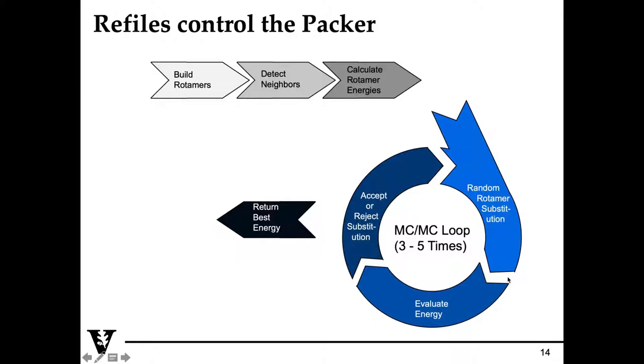After you've done your rotamer substitution, you allow for slight backbone movement to accommodate the rotamer substitution. The idea here is that you can either do a constrained design where you allow only rotamer substitution for highly constrained backbone, or you can do a more lenient sampling where you allow for backbone movement that accommodates these mutations.